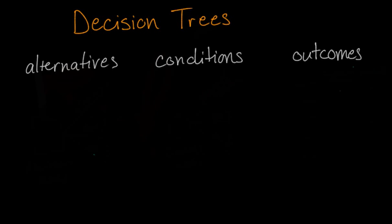This video answers the question: how to create a decision tree for risk analysis. There are three features in a decision tree that are important. First, the alternatives. These are the decisions that we're trying to choose between, the options that are available to us.